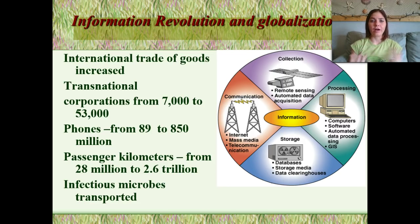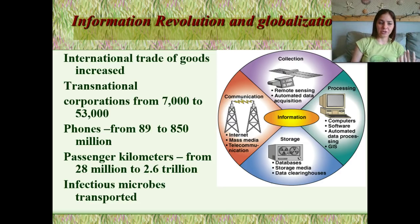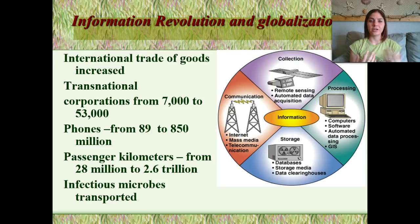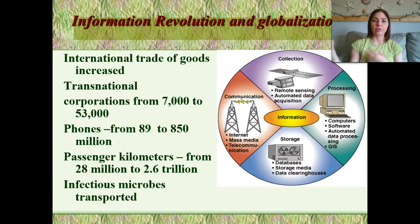Passenger kilometers — meaning how much we travel each year — has gone from 28 million to 2.6 trillion. And then we have the transportation of infectious microbes, because there's so much movement going on across the globe that we're transporting infections.